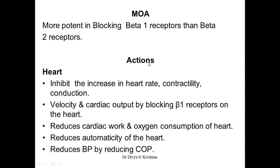The actions will be on the heart because their action is mainly on the beta-1 receptor, and these are the same actions we learned under the non-selective beta blockers. They inhibit the increase in heart rate, contractility, and conduction velocity. They decrease cardiac output, reduce cardiac work and oxygen consumption, reduce the automaticity of the heart, and reduce BP by reducing cardiac output.